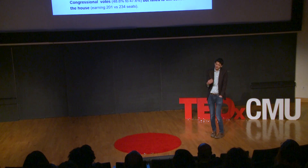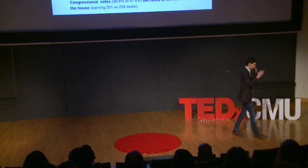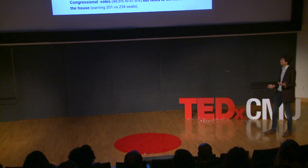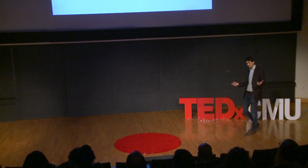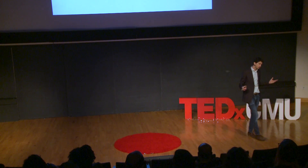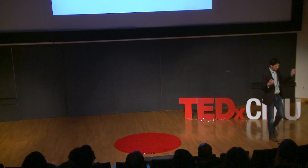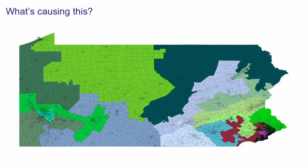When you see these results it's very surprising, and the question is: what's causing this? We said that elections are held in individual winner-take-all districts, so whatever is causing this has to be the districts. Here is a map of the congressional districts of Pennsylvania that were used for all congressional elections since the 2010 census.